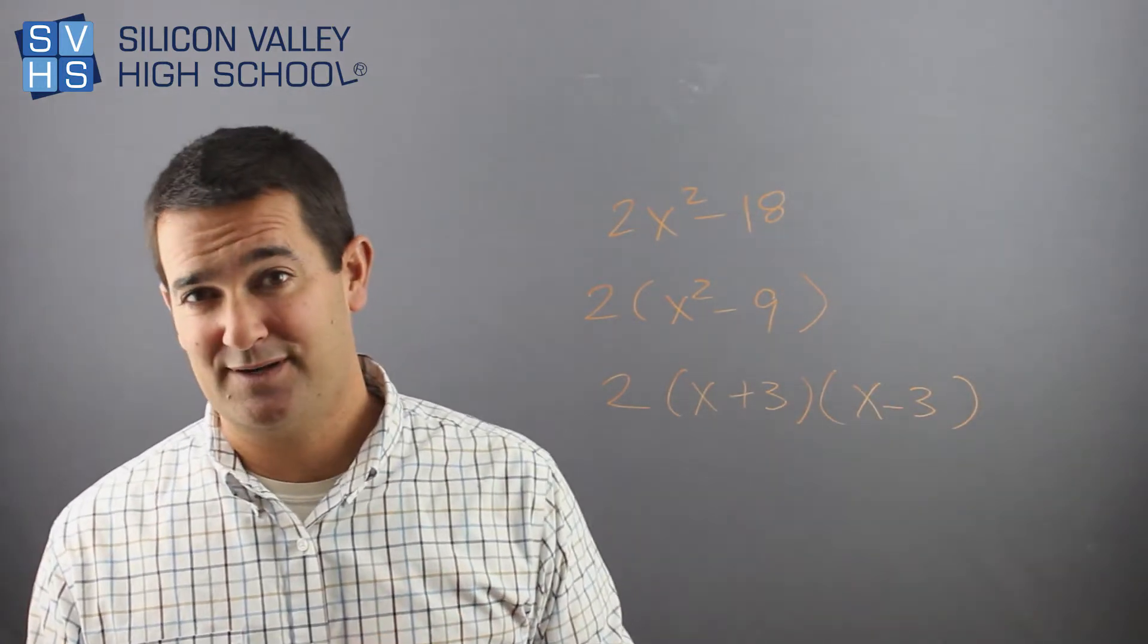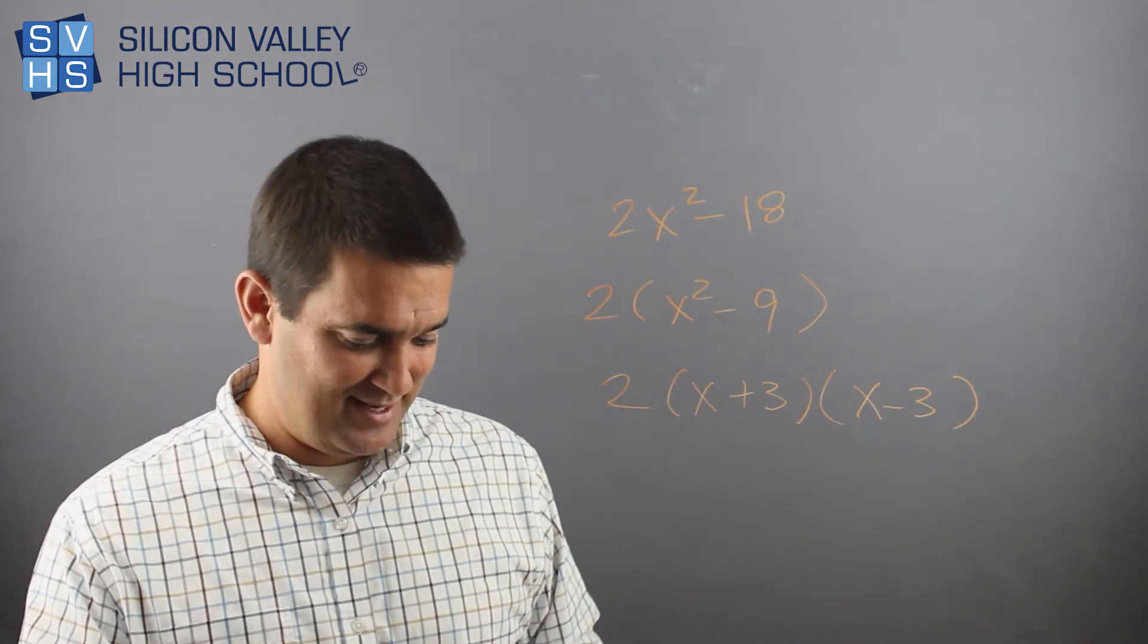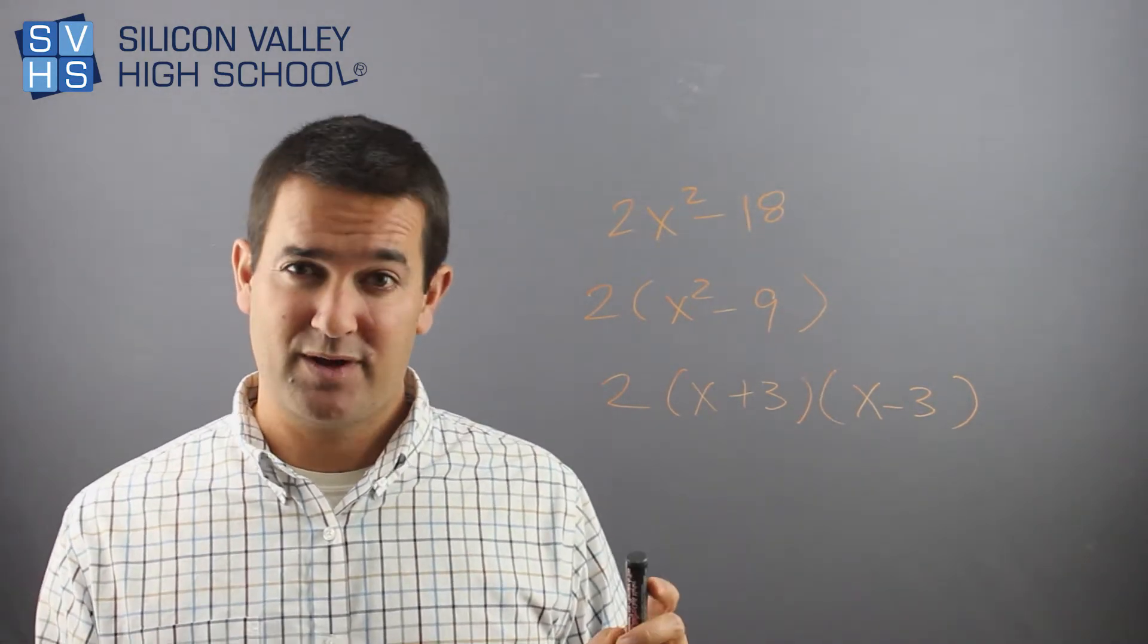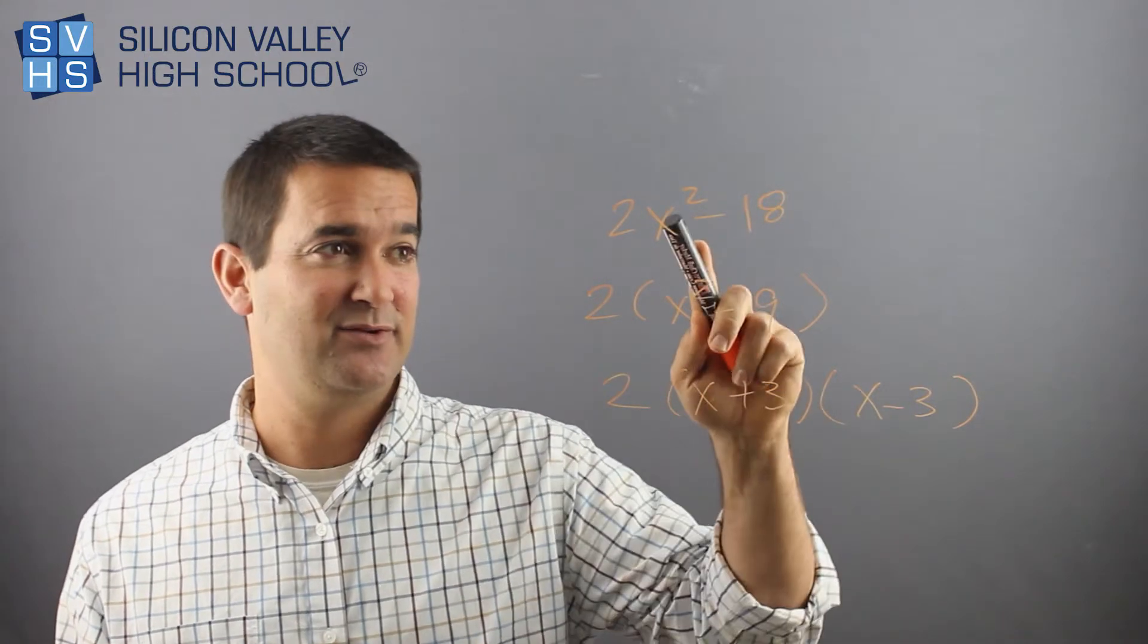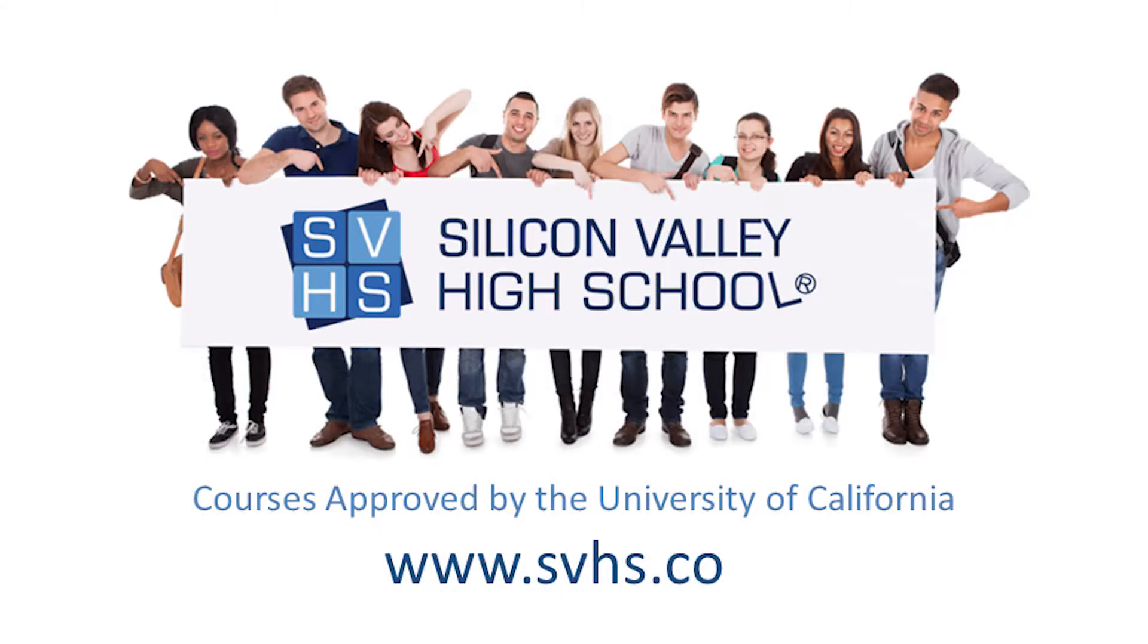I think difference of squares are awesome because they're so easy. As long as you're not being totally tricked by the system and you spot it for what it is, then it's pretty easy. The root of him plus the root of him, root of him minus the root of him. And remember, if you're struggling with Algebra 2 at your local high school, you can take this online at Silicon Valley High School and the credits will be transferred back to your school.